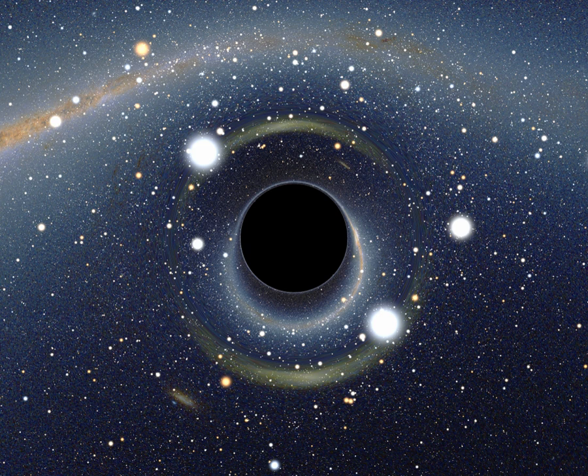Hawking's result was called the second law of black hole thermodynamics, by analogy with the law of entropy increase, but at first, he did not take the analogy too seriously. Hawking knew that if the horizon area were an actual entropy, black holes would have to radiate.